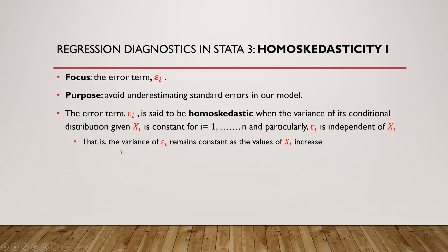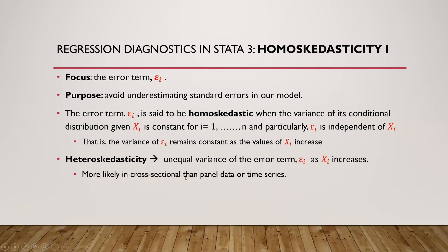That means we have constant variance as the value of x increases. When we don't have constant variance, we say we have a heteroscedasticity problem. It is usually more likely in cross-sectional data than in panel data or time series, because in cross-sectional data we have different units and different values. In panel data, we can have different values for different years coming from the same unit.